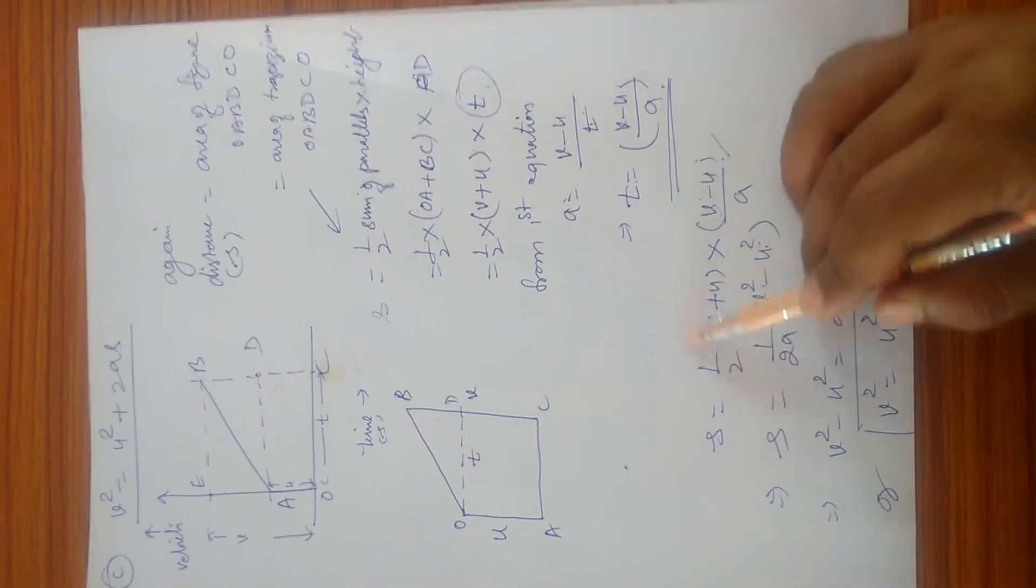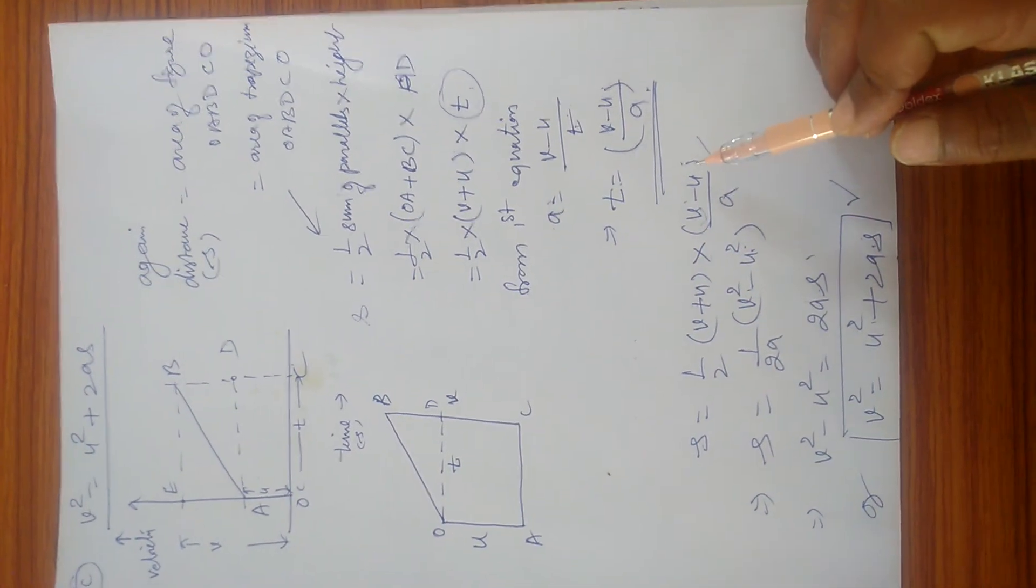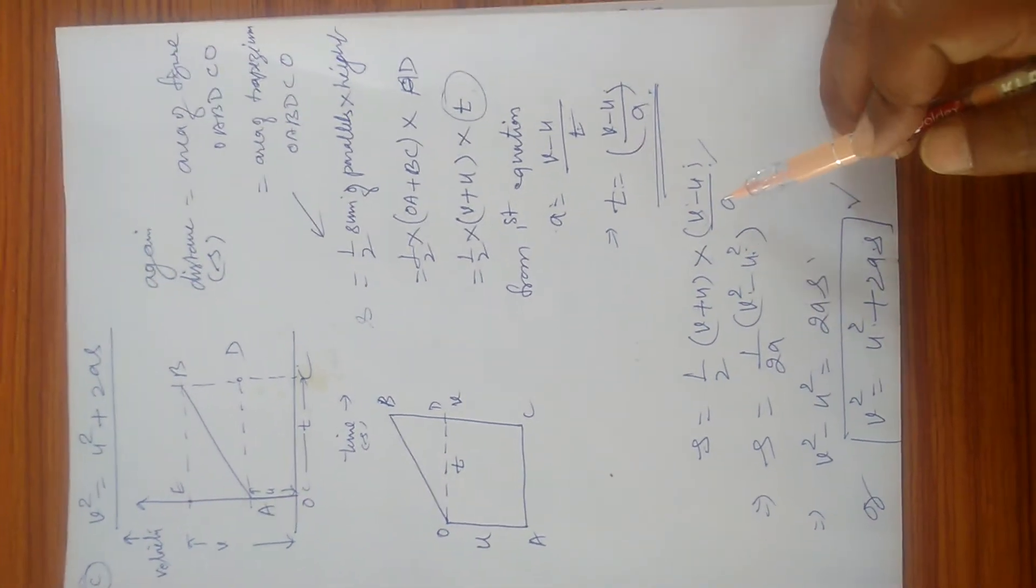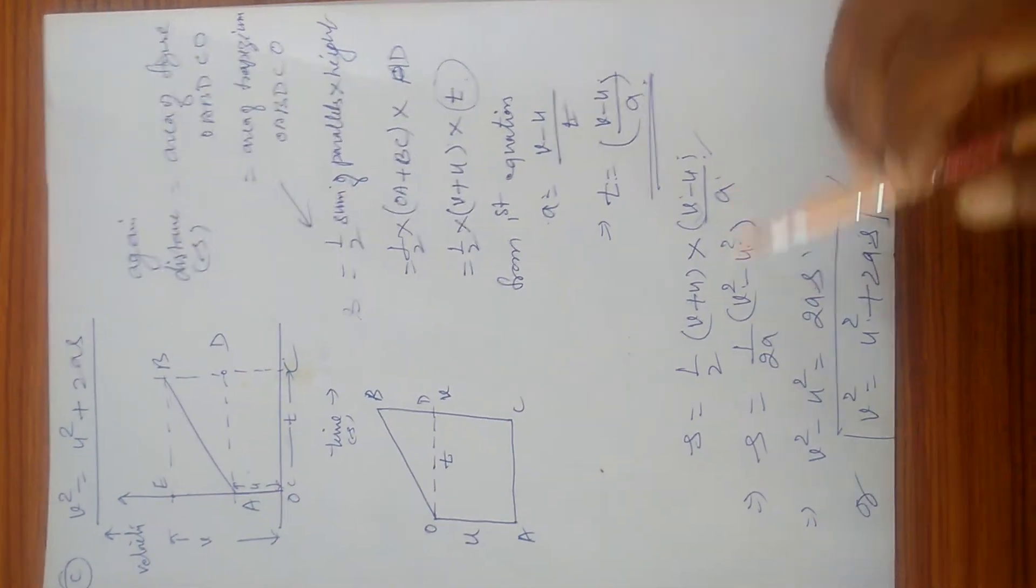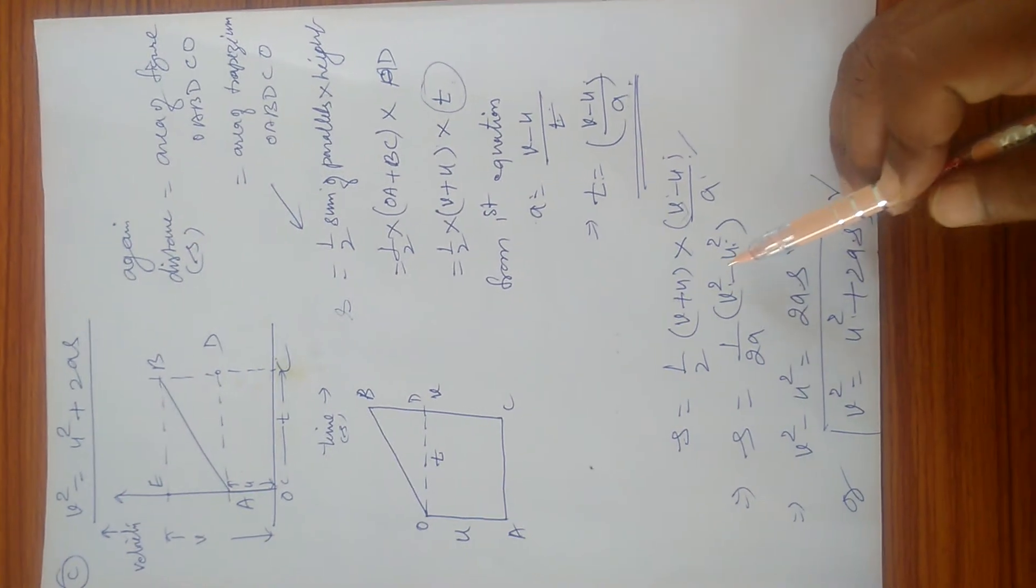In the numerator there are two brackets: (v + u) and (v - u). Their product is v² - u², and in the denominator there will be 2a. So s = (v² - u²)/(2a).